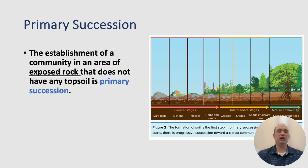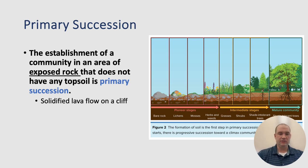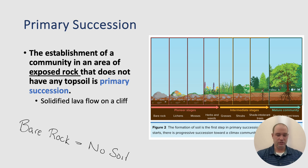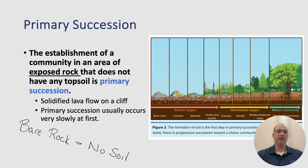The establishment of a community in an area of exposed rock that does not have any topsoil is called primary succession. This would be like a solidified lava flow on a cliff — we are starting with bare rock, which simply means we have no soil. The reason primary succession takes so long is that there's no soil present, and it takes a long time to develop. Primary succession usually occurs very slowly at first, then proceeds to progress in a normal fashion.